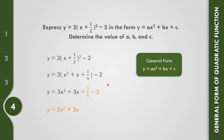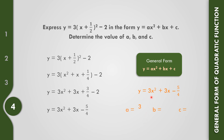Now combine 3 over 4 minus 2. Since negative 2 equals negative 8 over 4, we have 3 minus 8 over 4, which equals negative 5 over 4. The general form of the quadratic function is y equals 3x squared plus 3x minus 5 over 4. Therefore a equals 3, b equals 3, and c equals negative 5 over 4.